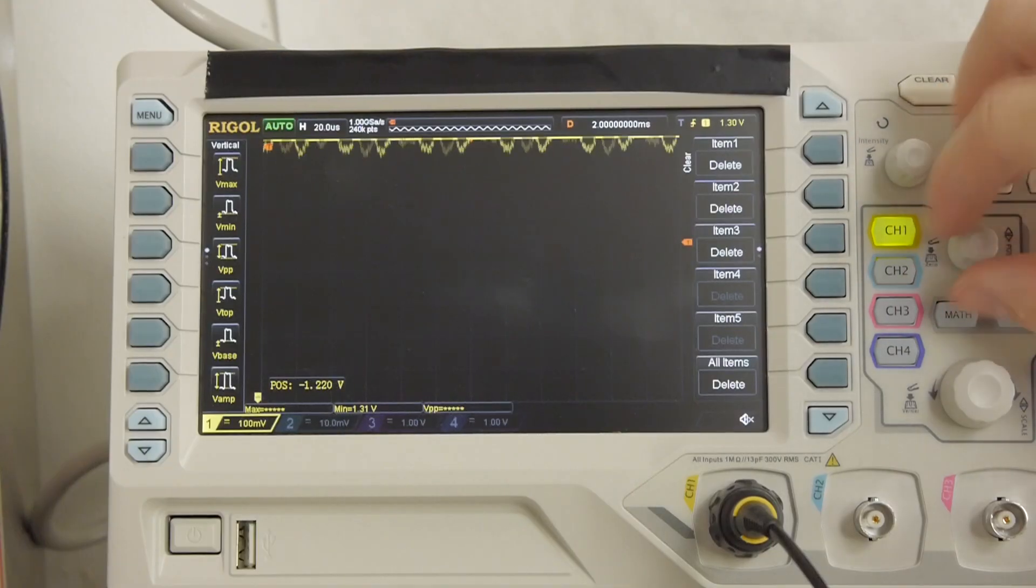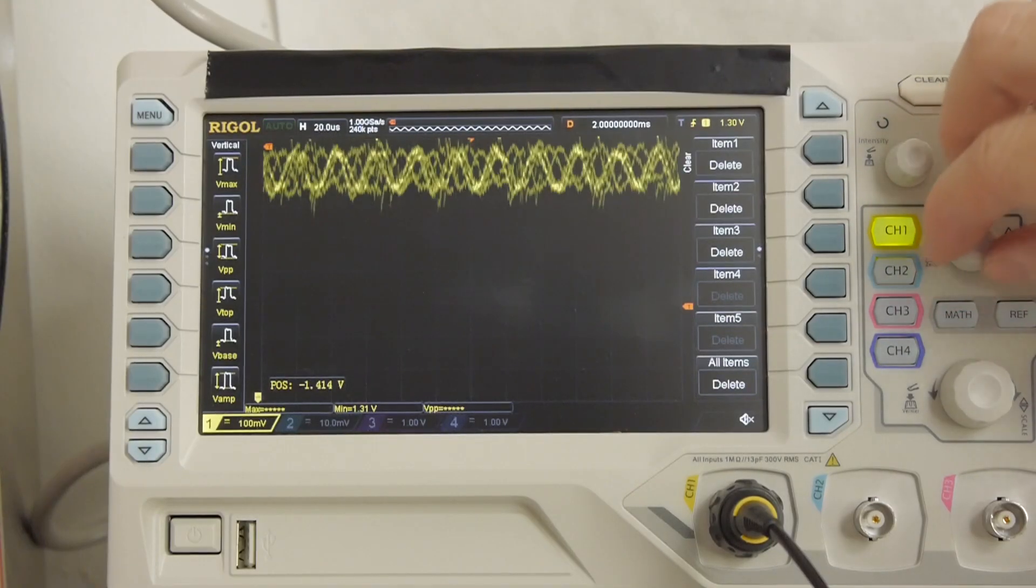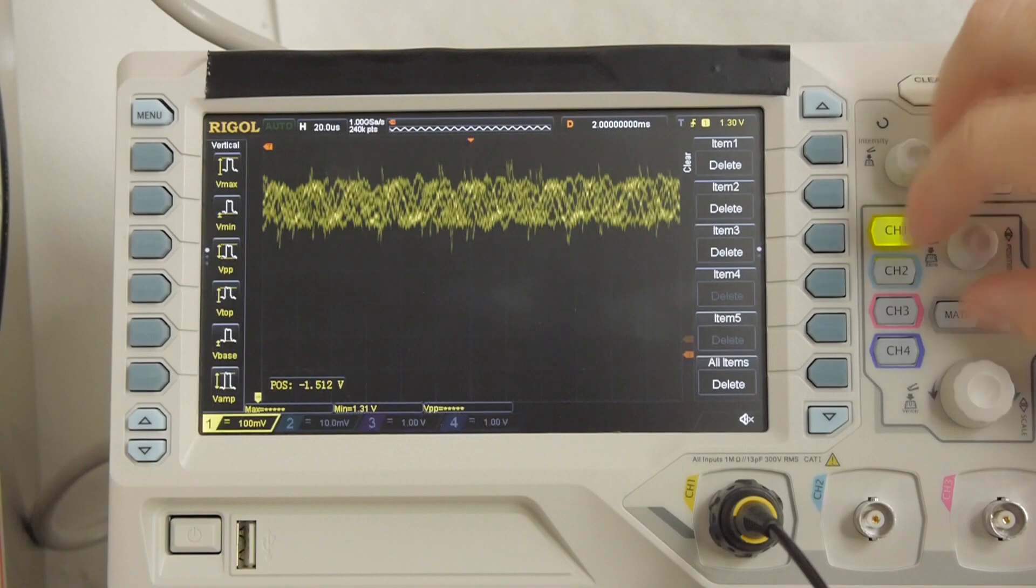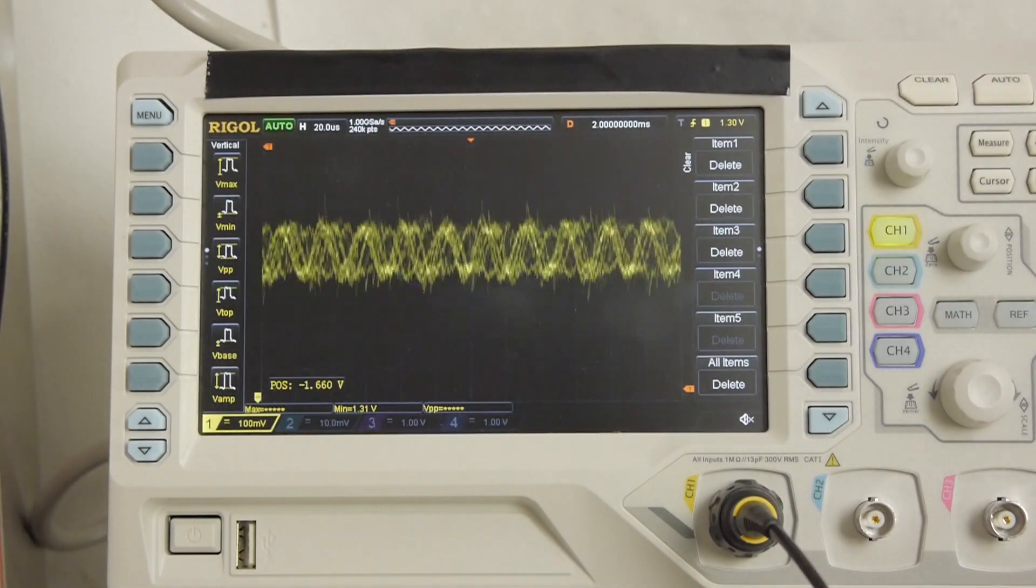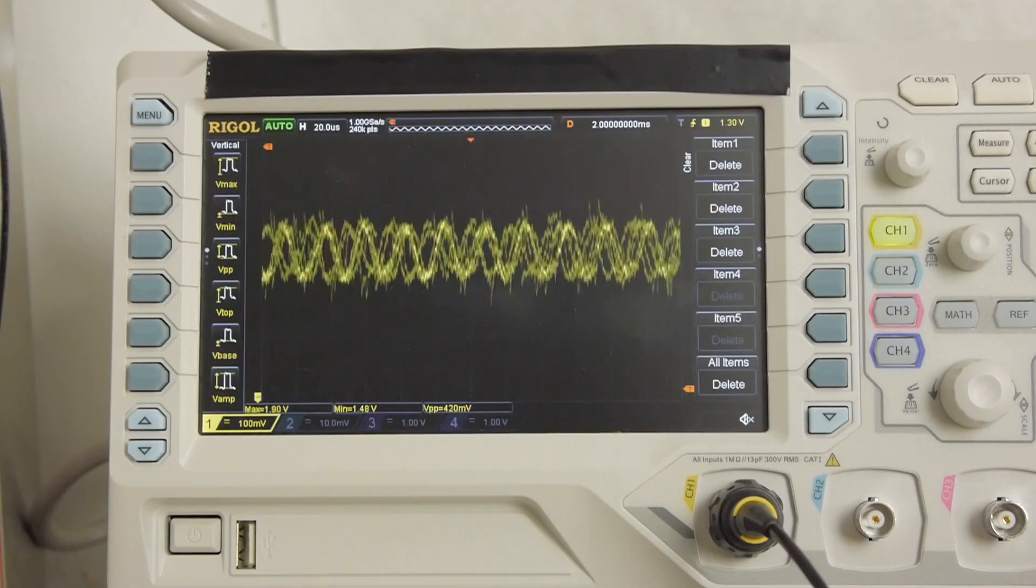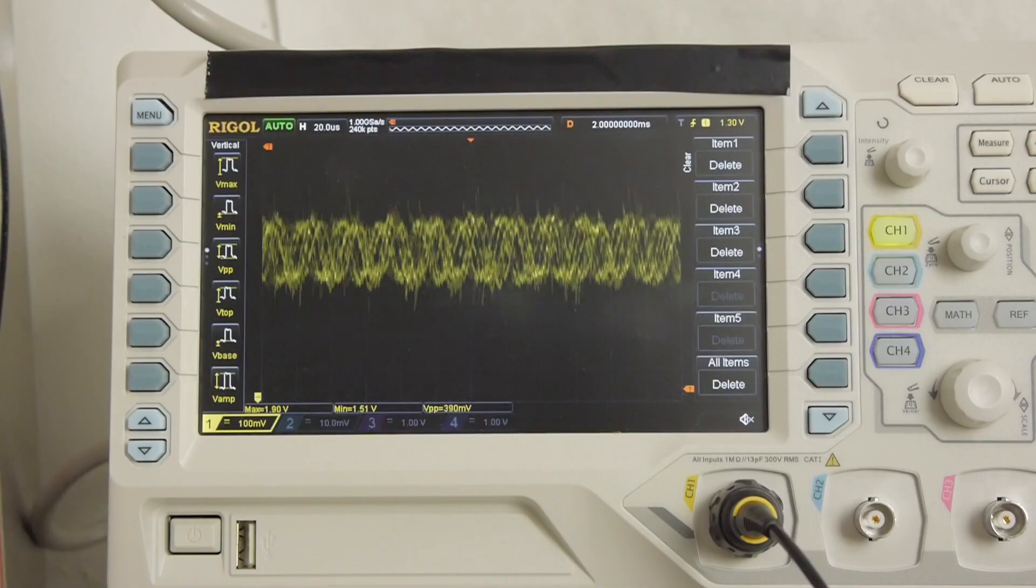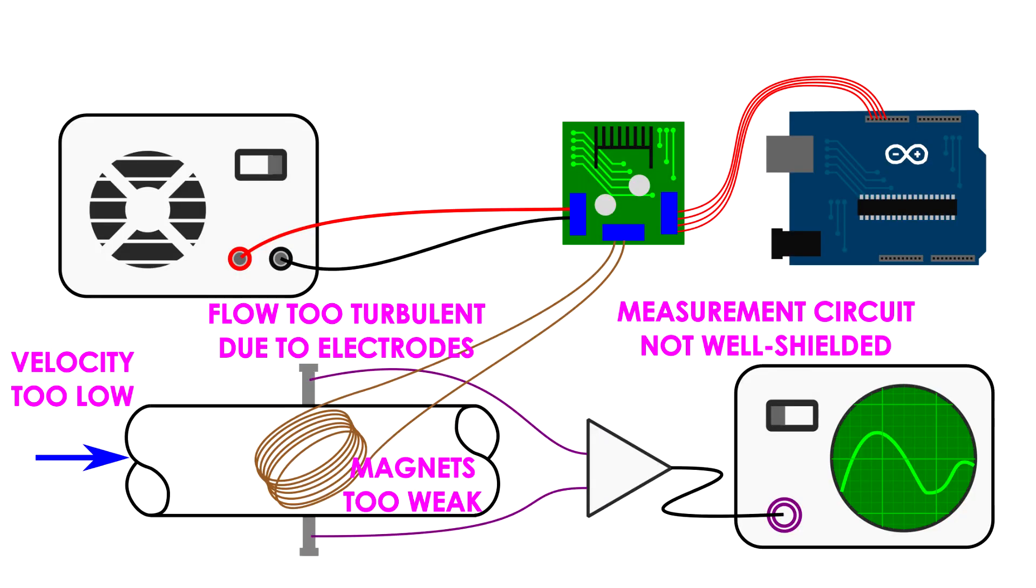From some literature I read, a well setup meter typically only generates about 100 microvolts for every foot per second of velocity, or about 300 microvolts for a meter per second. For my garage workshop and the pump I'm using, that's a needle in a haystack of RF noise and hum, especially considering that my crude apparatus can hardly be considered well set up.